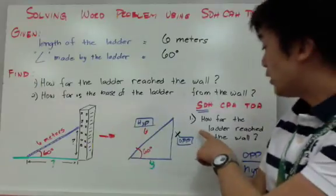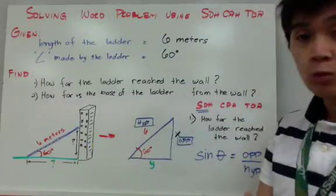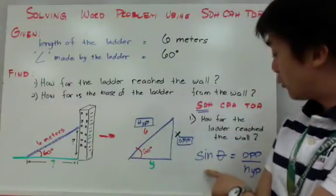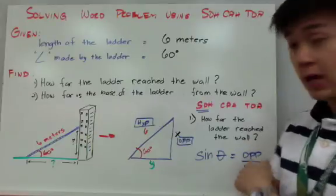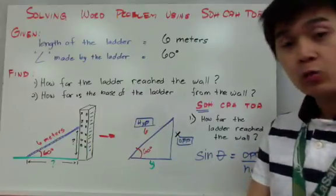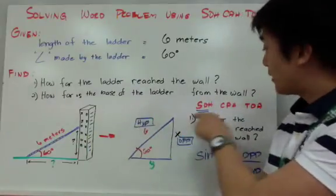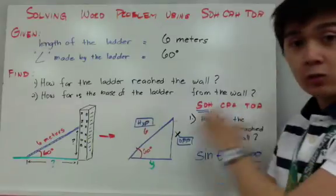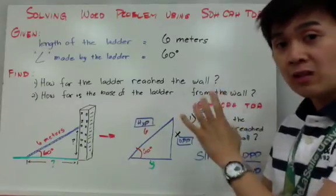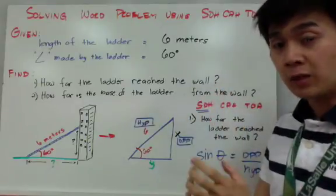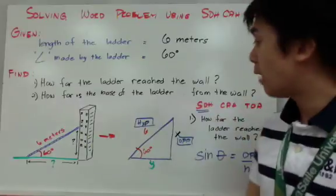Using SOH CAH TOA — sine, cosine, and tangent — since we are given the opposite and hypotenuse sides, we are going to use sine to solve this. You need to refer to your diagram and SOH CAH TOA to choose the correct formula for a specific problem.